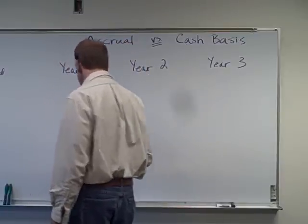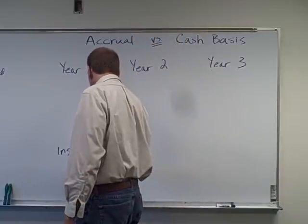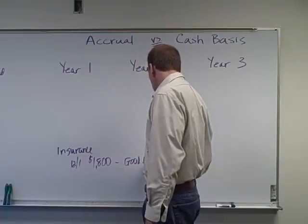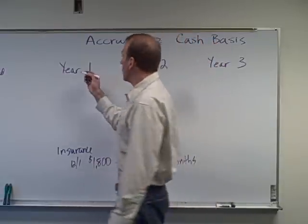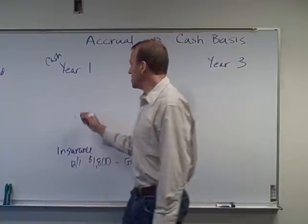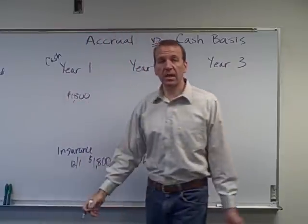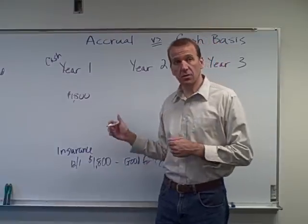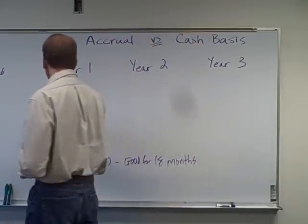We have an insurance policy that we purchase, which goes into force on December 1st. We're paying $1,800 for this policy, and it's good for 18 months. Under the cash basis, in year one we would have $1,800 of expense, because we recognize all of the expense when we pay the cash — in this case for the insurance policy.